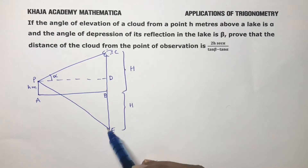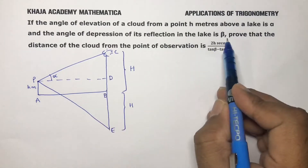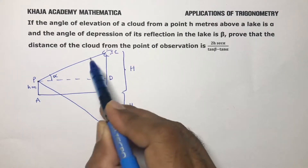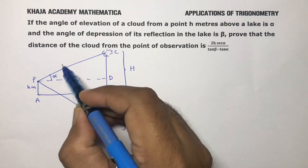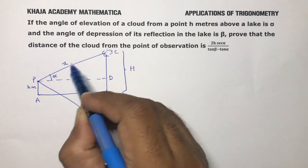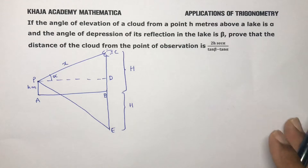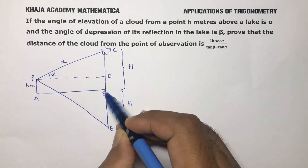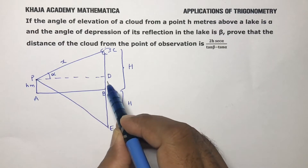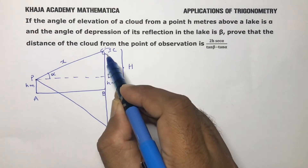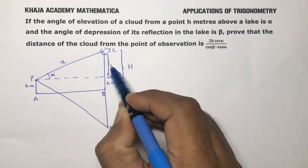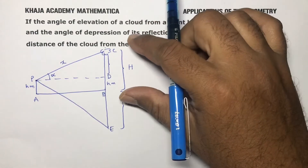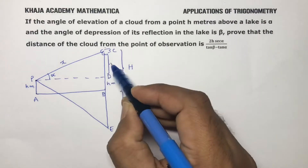The cloud's image is at E. We need to find x, the distance of the cloud from the point of observation. Now, if AP is h, then BD is also h. The total distance CD equals capital H minus small h.